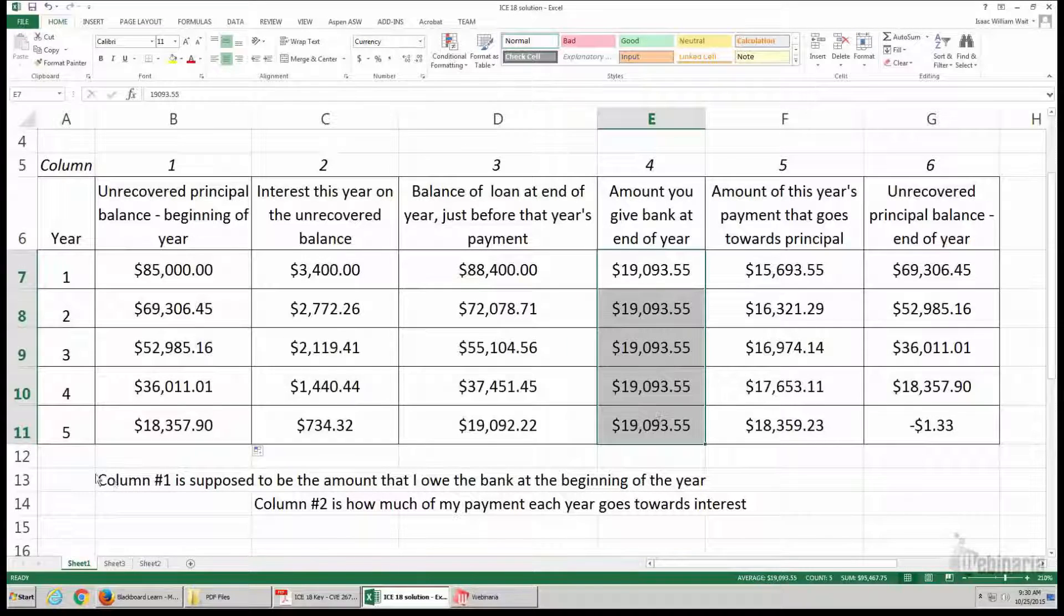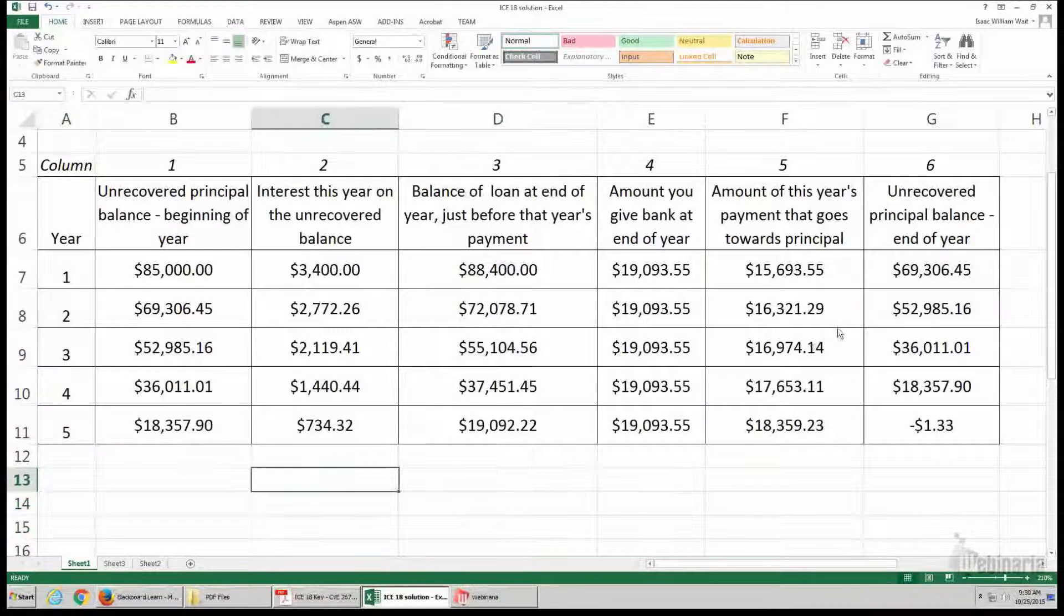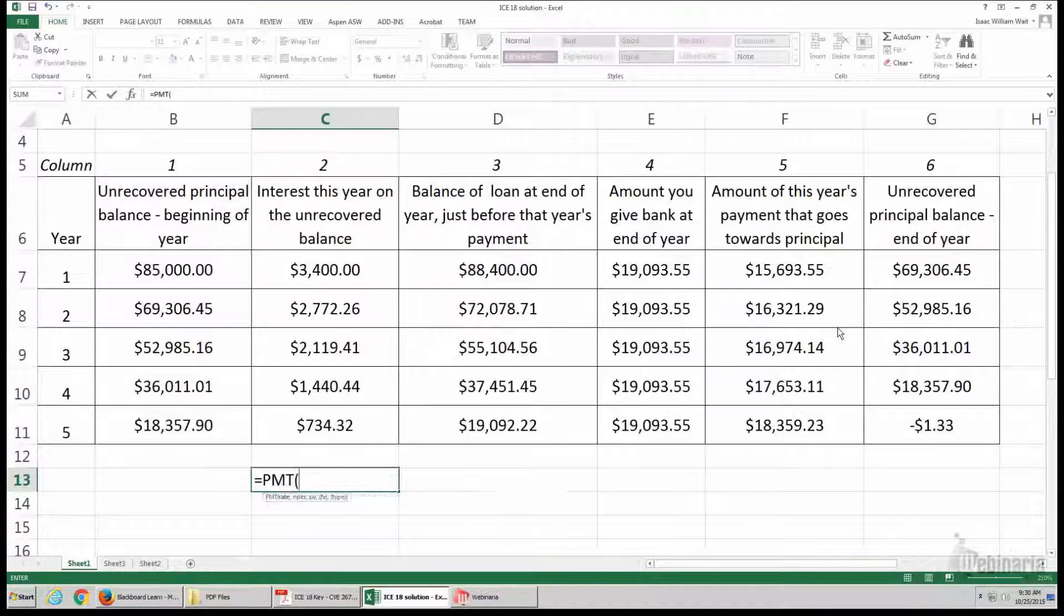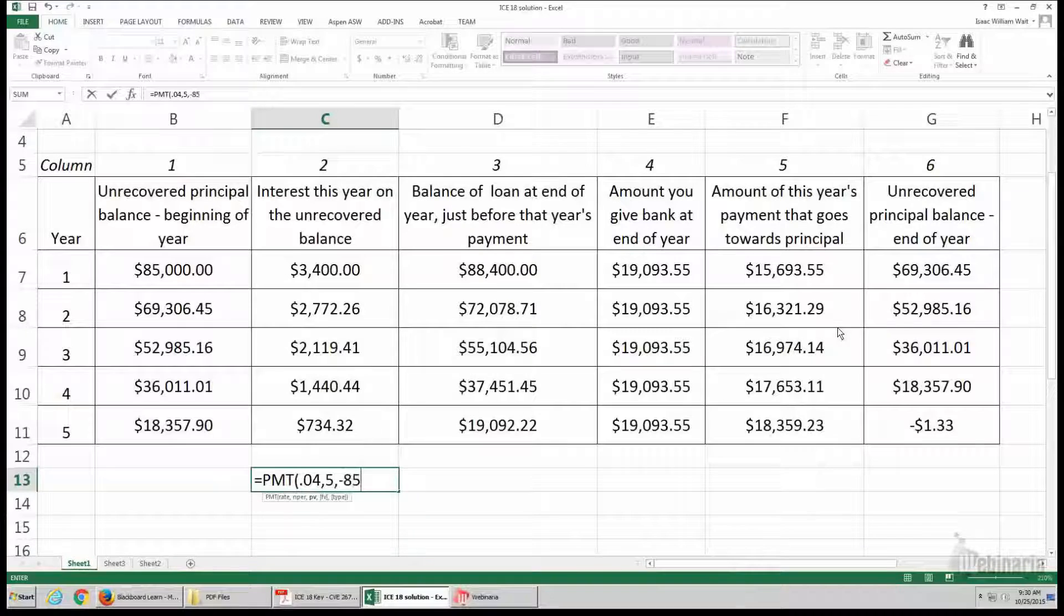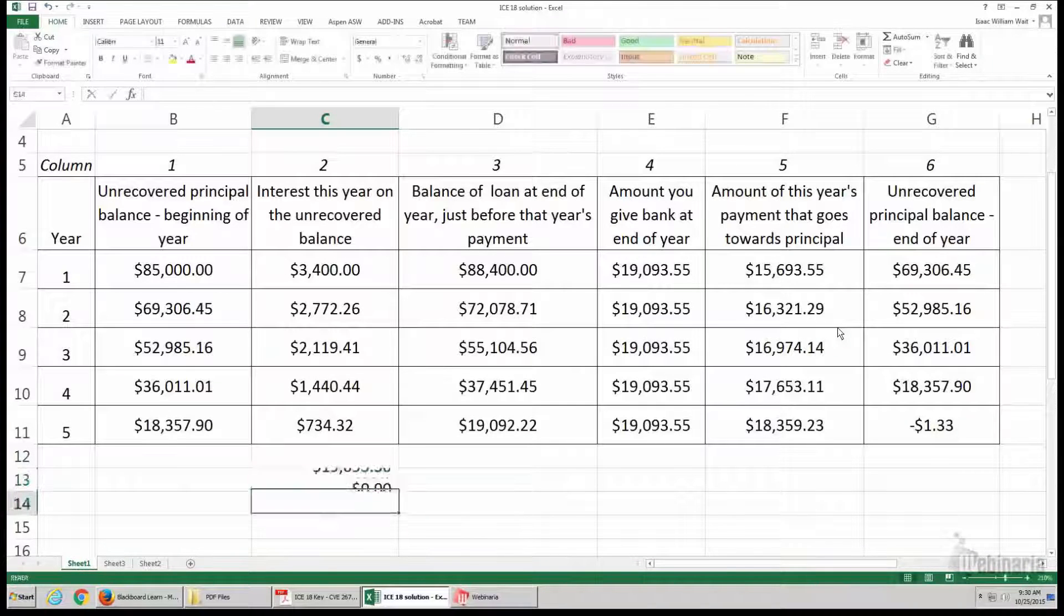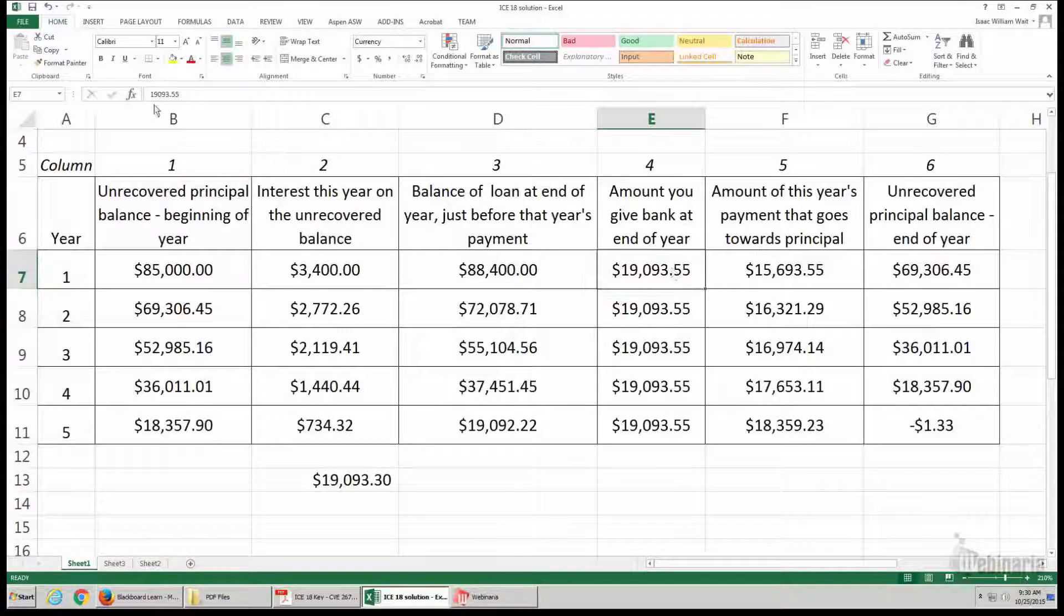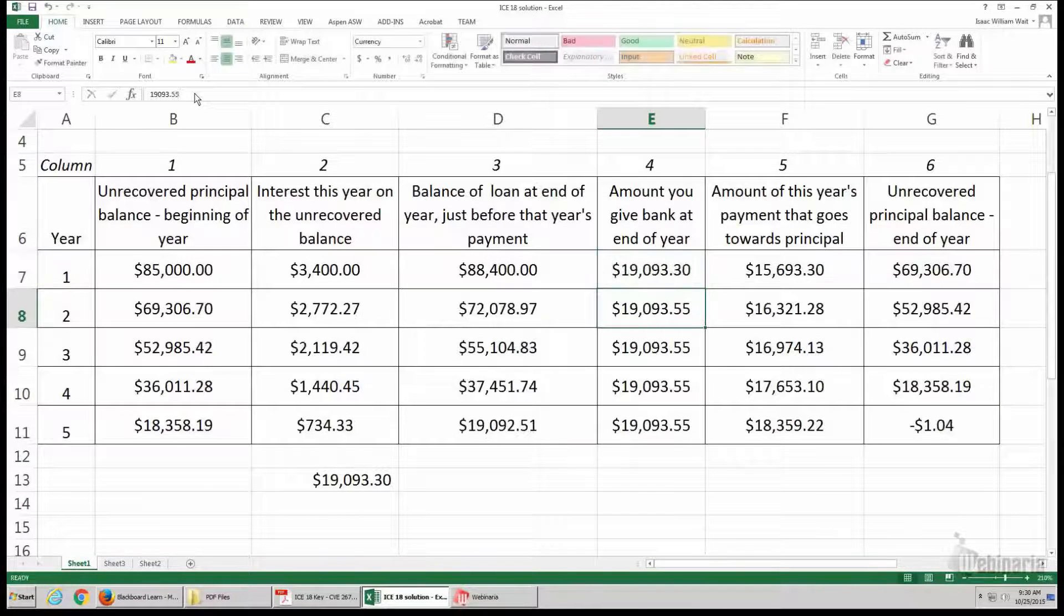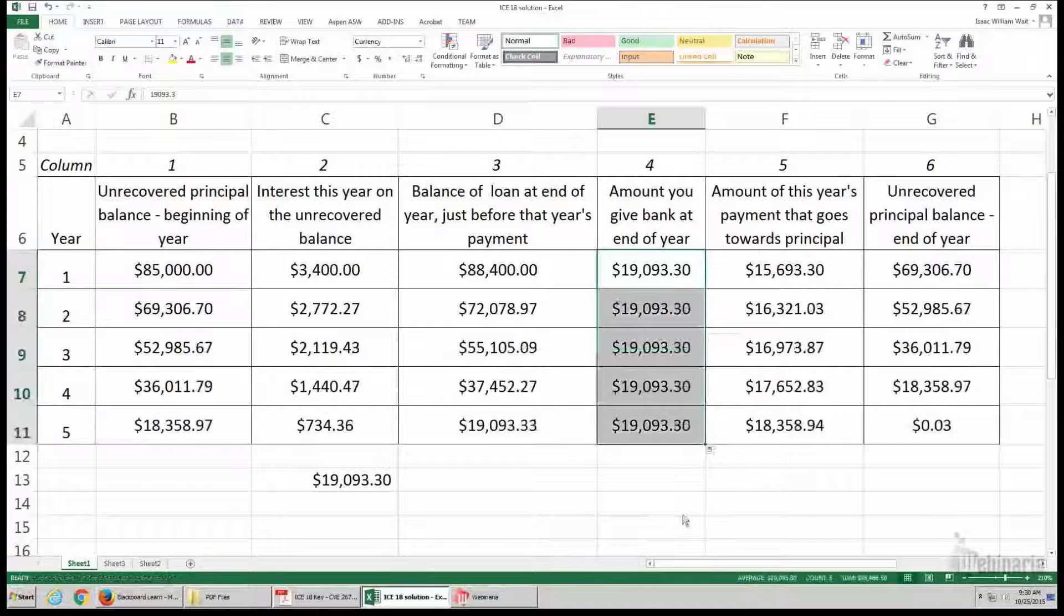And so there's a function in Excel that we can use to find a more precise payment, the equals PMT, and our rate is .04. The number of years is five years. Our amount, 85,000. So maybe 19,093 and 30 cents instead of 55 cents. Let's see if that gets us closer to zero when I use 30 cents instead of the 55. Yeah, that gets much closer.